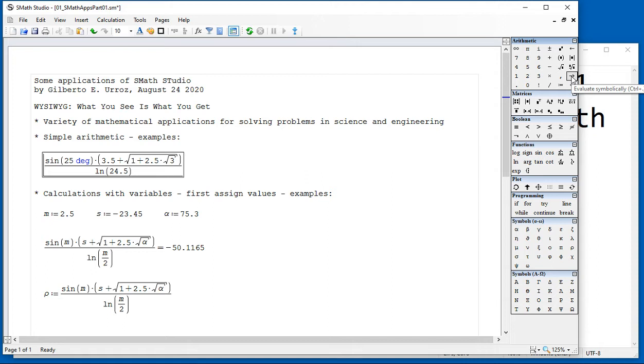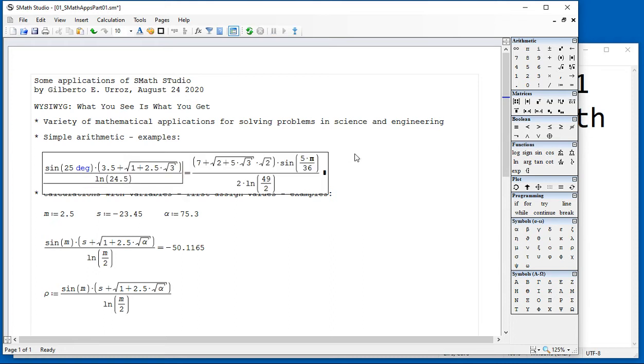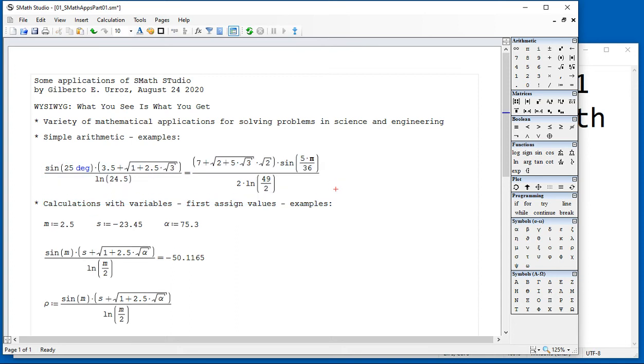That gives you what is called a symbolic result. Let's see what we get in this case, control dot. You get some simplification of the values presented, but not much. So the numerical result will be preferred in this case.